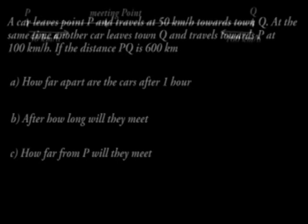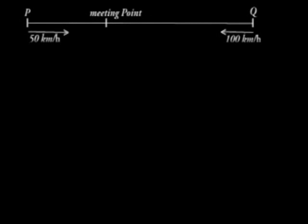We can sketch the journey as shown below. Relative speed is equal to the sum of their speed since they are travelling in opposite directions. That is 100 plus 50, which is 150 kilometers per hour.